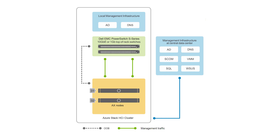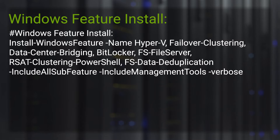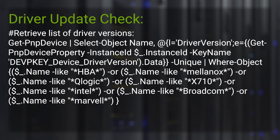Here is a graphical view of the configuration we're about to deploy. We have two AX type nodes in a multiple switch environment. We're using Windows Active Directory, which is a requirement for this type of configuration. We start out with the Windows feature install using a particular PowerShell command, then follow that up with a driver update check compared against the support matrix.